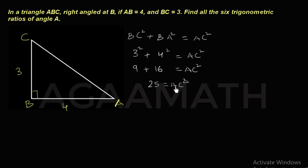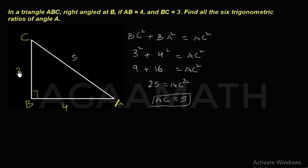So AC equals 5, because 5 squared is 25. Now we know what AC is — 5 units. We have found all three sides of the triangle.